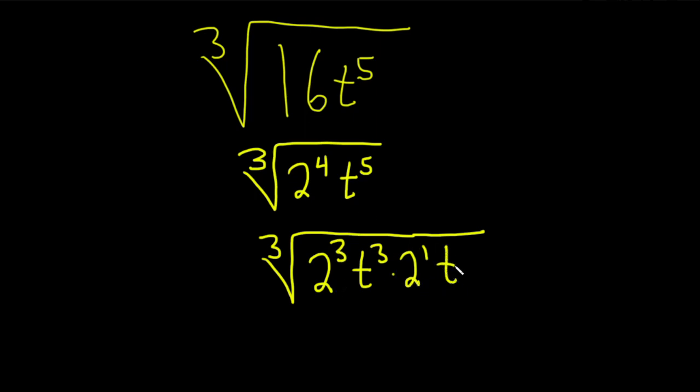And we also have a t squared. And again, that's because when you multiply the t squared and the t cubed, you add the exponents.